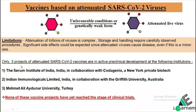In the case of SARS-CoV-2, only three projects of attenuated vaccines are in active clinical development. The first is the Serum Institute of India in collaboration with Codagenix, a New York private biotech company. The second is Indian Immunologicals Limited, India, in collaboration with Griffith University, Australia. The third is Mehmet Ali Aydinlar University, Turkey. None of these vaccine projects have yet reached the stage of clinical trials.